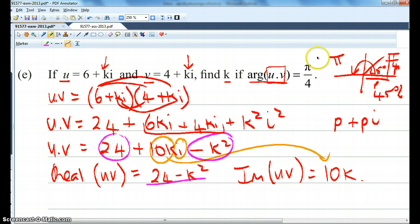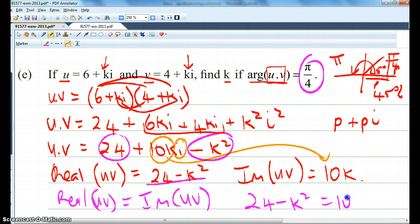Now, because of this pi upon 4, we've got the real part of uv equals the imaginary part of uv. Therefore, I've got 24 minus k squared equals 10k.